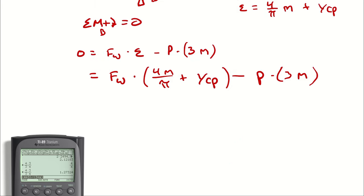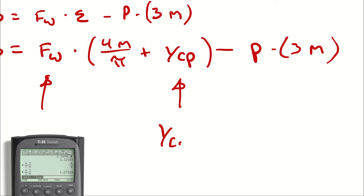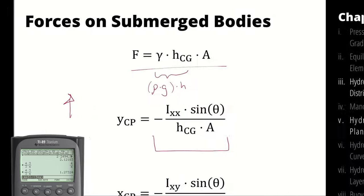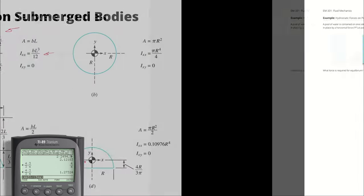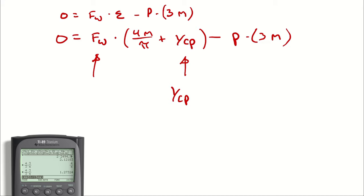FW times four meters divided by pi plus YCP minus P times three. Our goal is going to be to write this out only in terms of P so that we can use this equation to solve for P. So, I'm going to want to try to figure out FW and YCP separately. For YCP, we have the same calculation as we did in the previous example problem, which comes from this slide. We have the force of water is equal to gamma, the specific weight, which is density times gravity, times the height from the surface of the fluid down to the center of gravity times the area of effect.